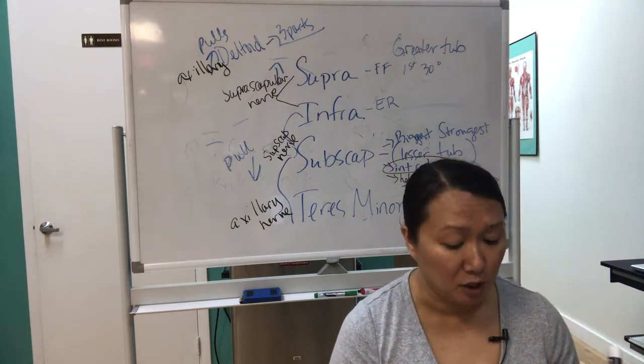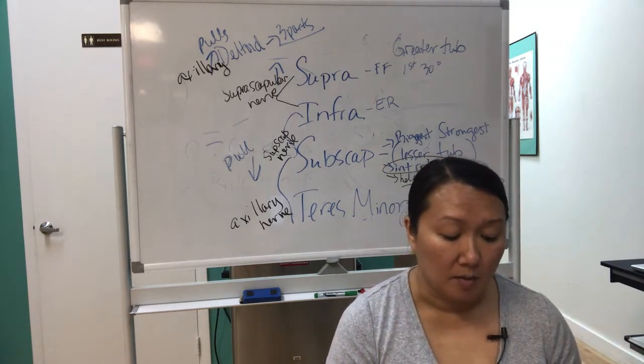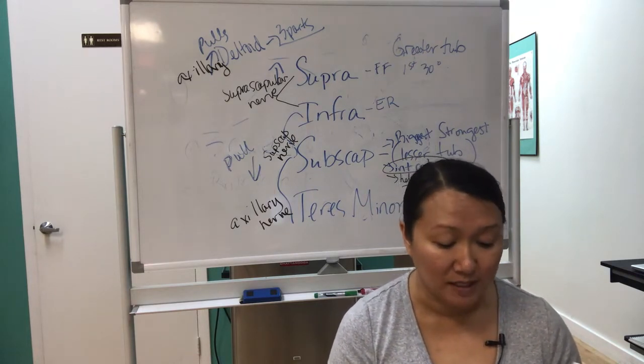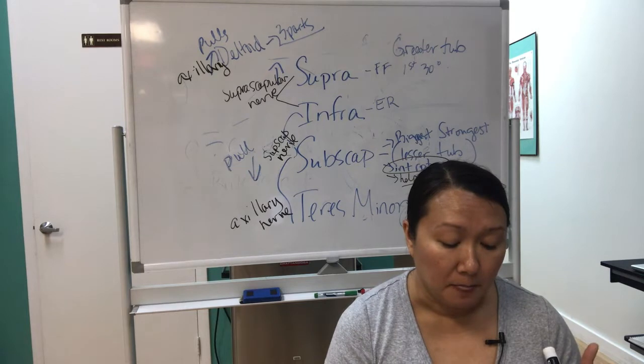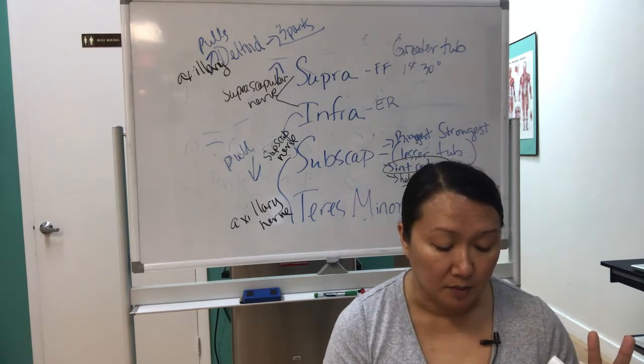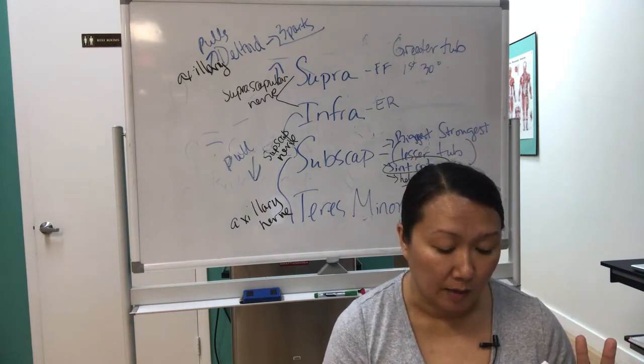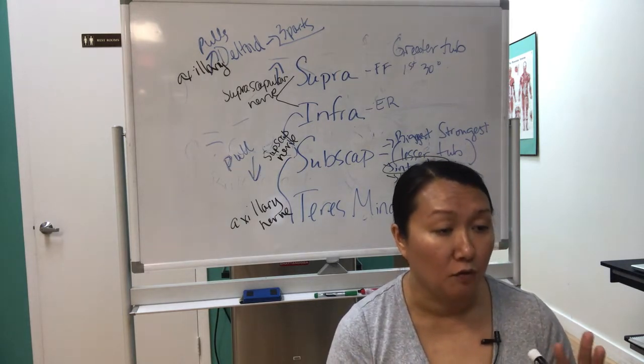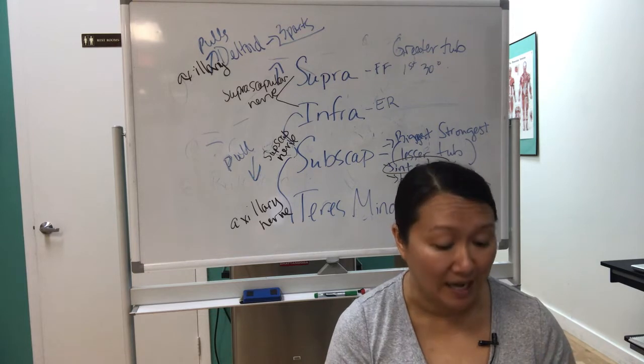In the videos, I go over the impingement signs. So when it's a rotator cuff, you're going to look for impingement signs. And there's two different types of tests. And then you can do the Job's test or the empty can. You're looking for impingements or you're looking for tears.